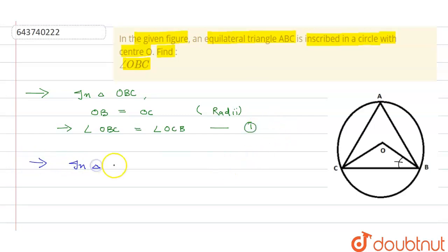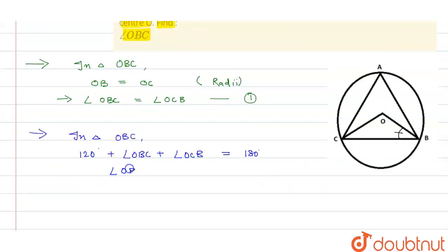Now, in triangle OBC, 120 degrees plus angle OBC plus angle OCB is equals to 180 degrees.